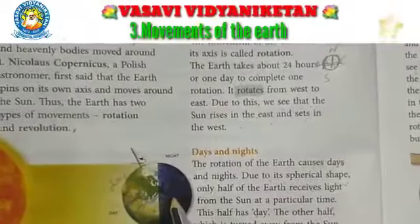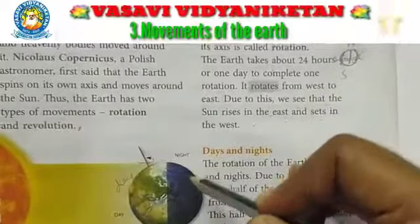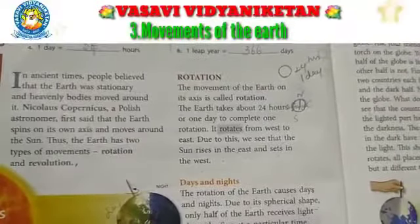So this side is night and this side is day. This is how the rotation of the earth causes day and night.